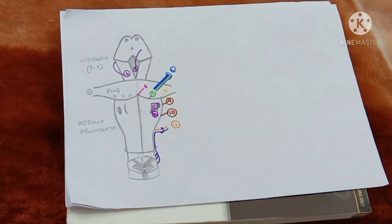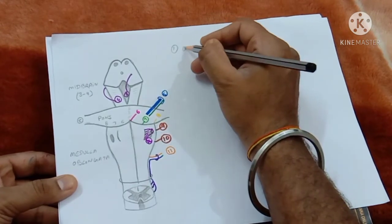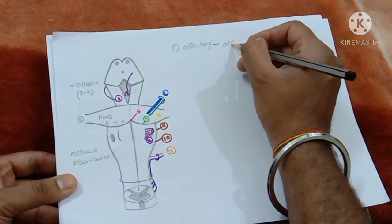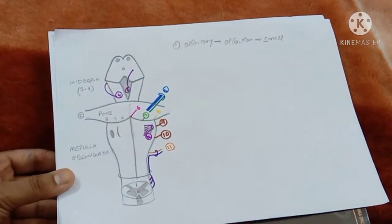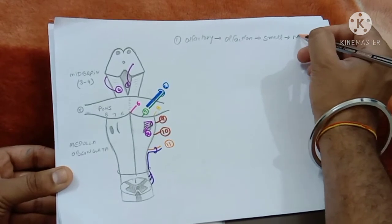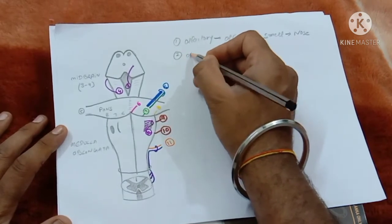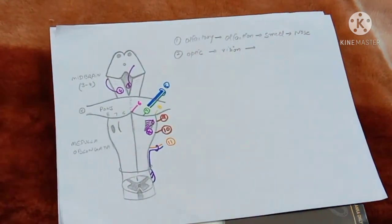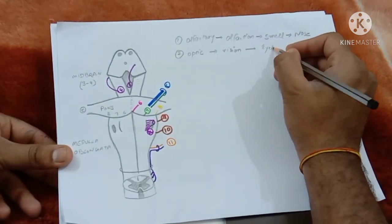That was all about the origin of the cranial nerves. Now we will discuss the names of the cranial nerves. The first cranial nerve is called olfactory — olfactory is related with olfaction, meaning smell. It is related with the sense of smell and originates from the nose. The second is called optic — optic is related with vision and the eyeball. The optic nerve is related with the eyeball.